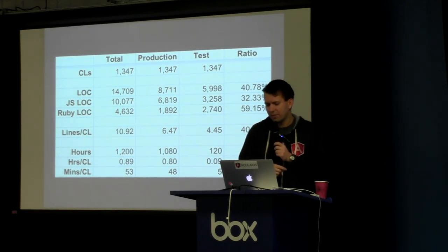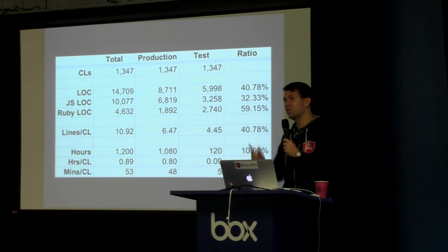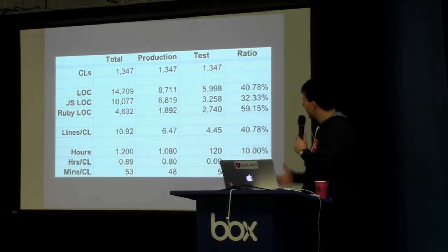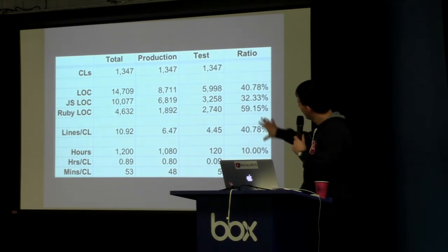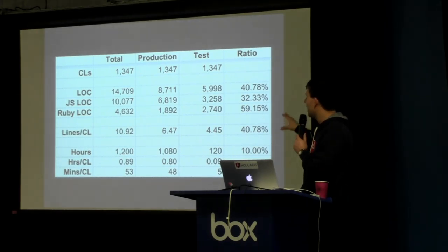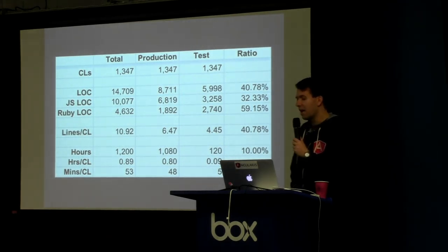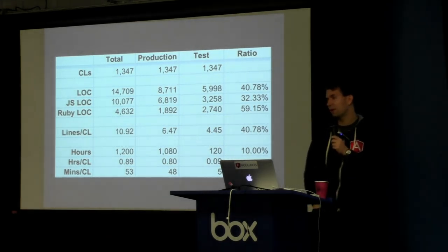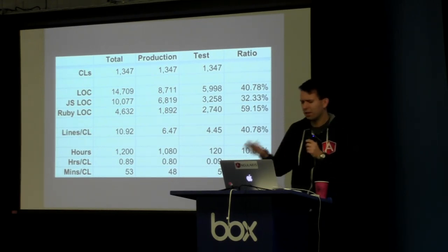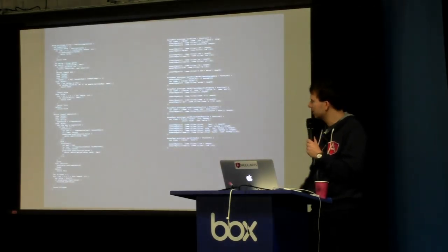The first obvious reaction is: I have to write twice as much code, therefore it's going to take me twice as long. Well, that's actually not true — that's part of the myth I want to address. Look at the bottom: it shows how many hours I spent writing production code versus how many hours writing test code. It turns out I spent only about 10% of my time writing the test code. How can you write so much more code and yet spend so little time writing the tests?